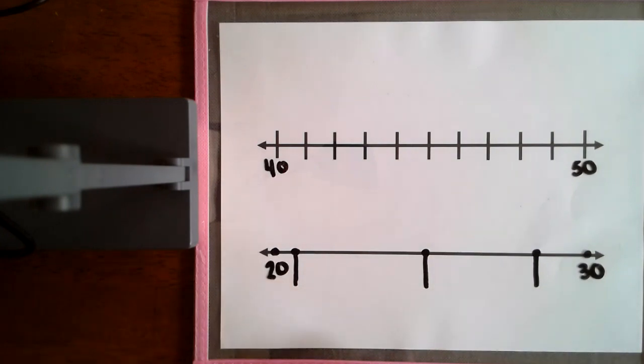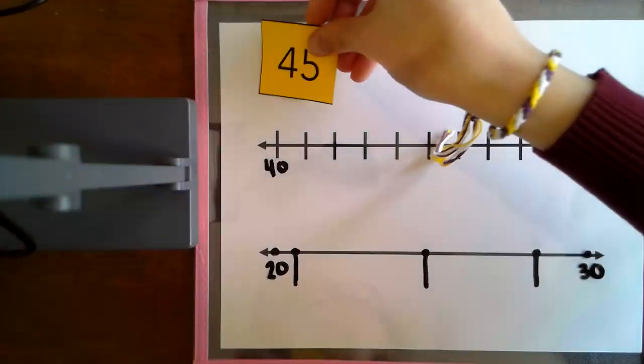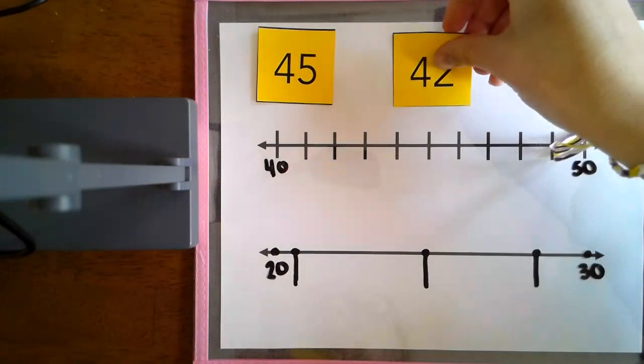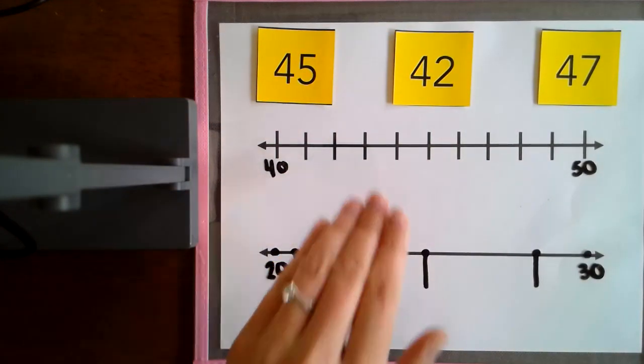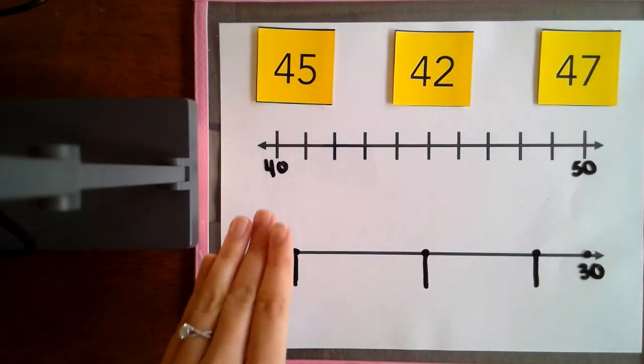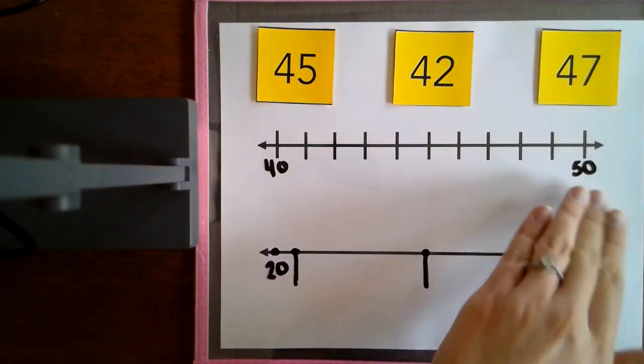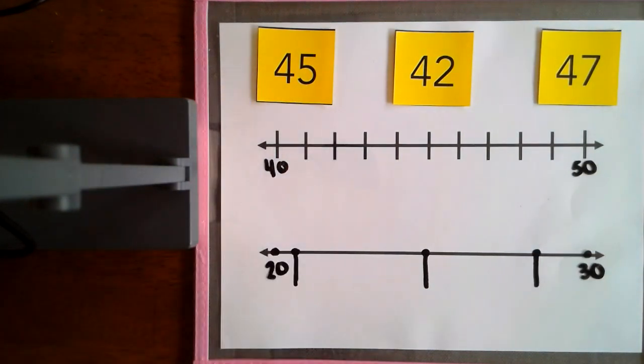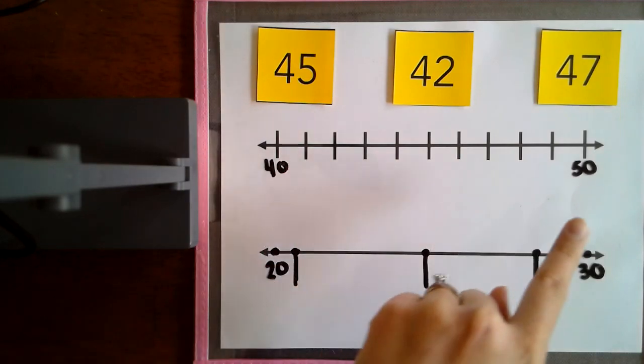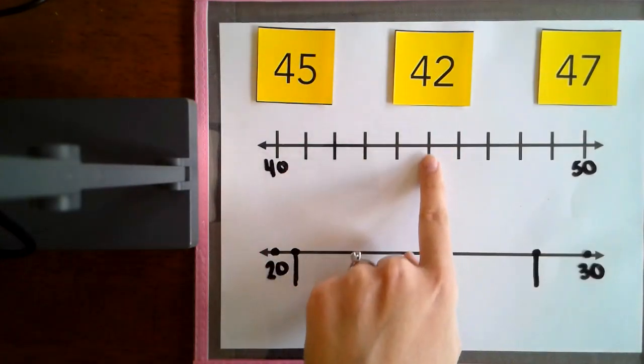Let's take a look at these three numbers: 45, 42, and 47. We're going to order those on our number line. This number line goes 40 to 50. Let's start with 45. 45 is in the middle between 40 and 50, so in the middle is about here.